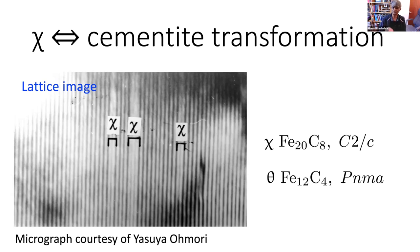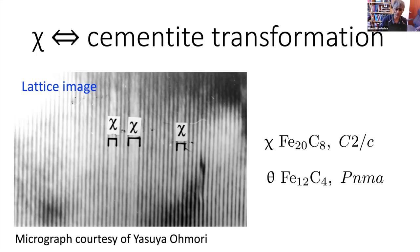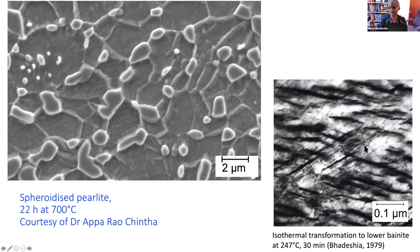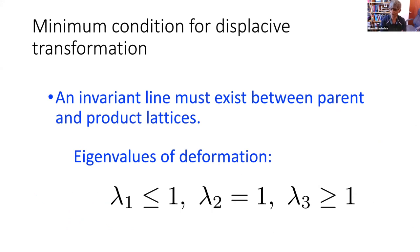Thin plate shape is not a sufficient characteristic to indicate a displacive transformation, but if it is displacive you must have a thin plate shape. Cementite which forms at high temperatures has a shape which is more or less spheroidal. Pearlite forms by a diffusional mechanism — the cementite in pearlite has a very complicated shape that undulates a lot. The plate-like shape we get when cementite forms at low temperature, where iron atoms cannot diffuse, is a strong indication — though not sufficient — that the transformation is displacive.